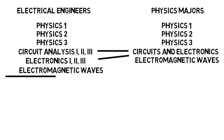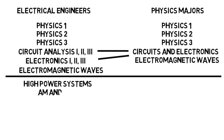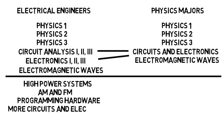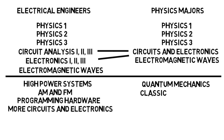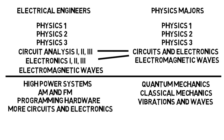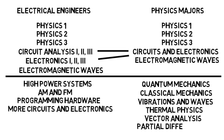So again, let's go back to our list of similarities and draw a line for the differences. We saw that electrical engineers learn about high-power systems, AM and FM radio waves, programming hardware like robotic vehicles, and just more on circuits and electronics. Physics majors see quantum mechanics and take multiple classes on it as well. They see classical mechanics like with the air resistance problem, vibrations and waves with the complicated springs, thermal physics, and lastly, a few more math classes. There are more to these majors, of course, but I think you get the idea.